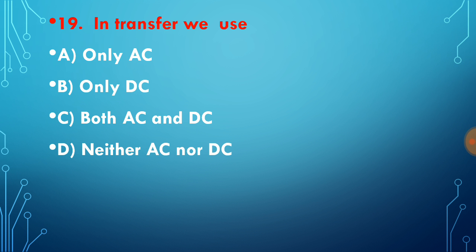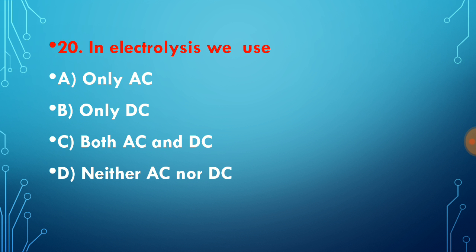In transformer, we use - options are only AC, only DC, both AC and DC, or neither AC nor DC. Transformer works on the principle of electromagnetic induction. In electromagnetic induction, the flux should always change, and the change in flux is always given by AC. So in transformer we use AC.